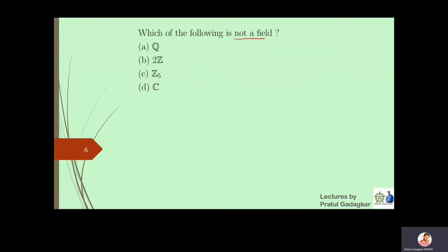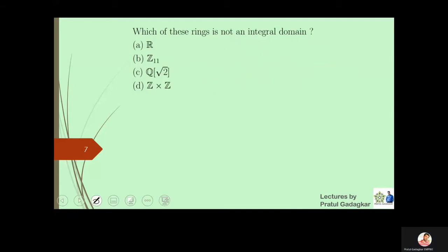The next question is which of the following is not a field. Here, Q, Z_p (where p is prime), and the complex numbers are all fields. However, 2Z is not a field because it has no unity, so 2Z is not a field.